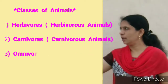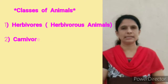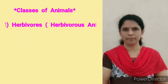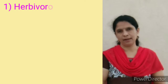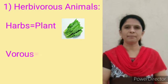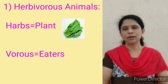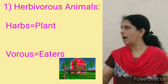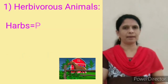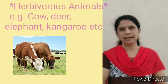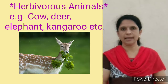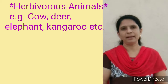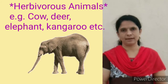Let us see all these classes in detail, one by one. First one is herbivores. 'Herb' means plant and 'vores' means eater. Animals that eat only plants are called herbivorous animals or herbivores. They are also called plant eaters or plant-eating animals. For example: cow, deer, elephant, rabbit, and kangaroo.